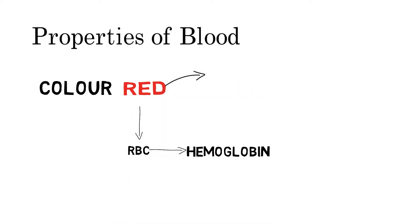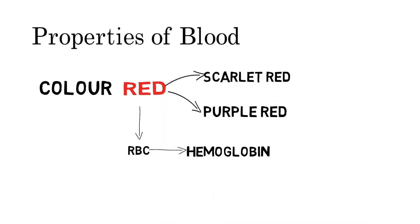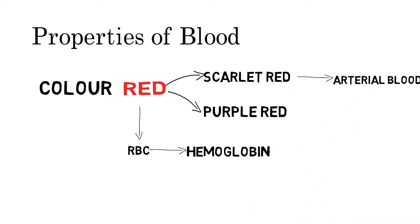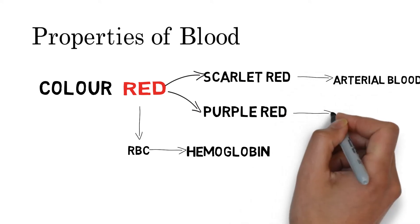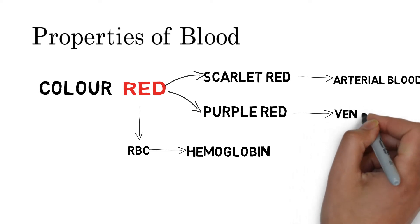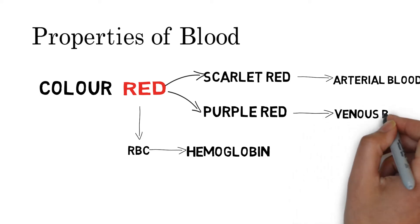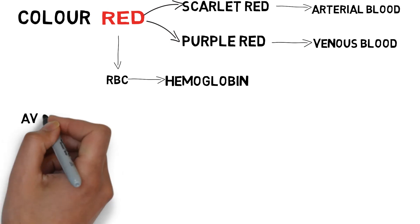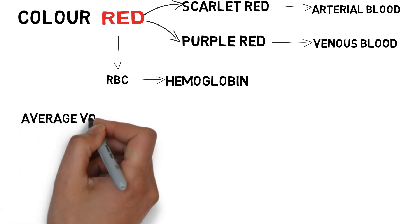You can differentiate red color into scarlet red or purple red. Scarlet red can be seen in arterial blood because it contains more oxygen, and purple red can be seen in venous blood because it contains more carbon dioxide.